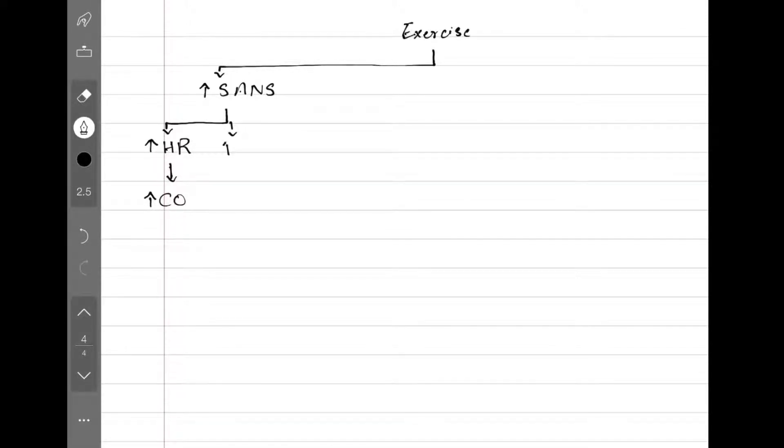Number two: sympathetic system activates beta-1 receptors on the heart which results in increased force of contraction. Because of that, we get increased stroke volume and increased cardiac output. Third, the sympathetic system activates venous alpha-1 receptors. We get increased venous return because the blood is squeezed out of the veins. This causes increased end-diastolic volume, which results in increased stroke volume and again increased cardiac output.